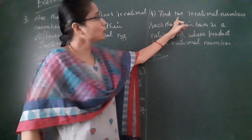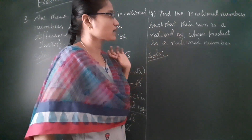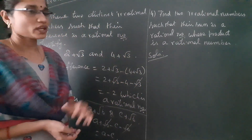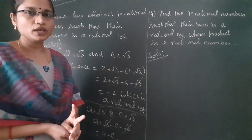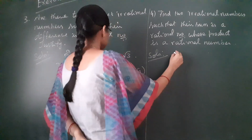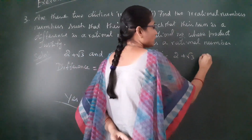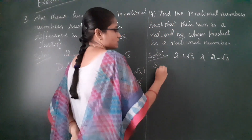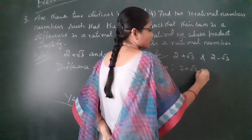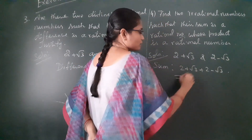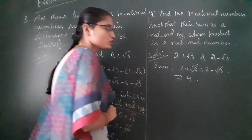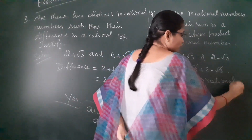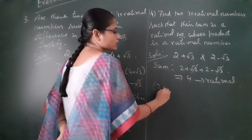Find two irrational numbers such that their sum is a rational number and their product is also a rational number. Let us consider the two irrational numbers 2 + √3 and 2 − √3. First, let us find the sum: (2 + √3) + (2 − √3). The √3 terms cancel, giving a sum of 4, which is a rational number.